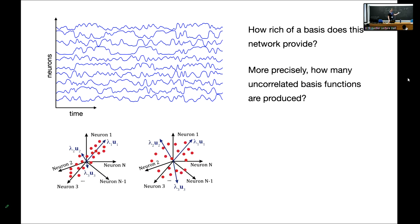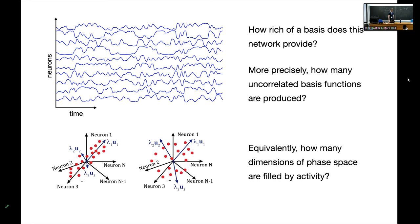When you take the shift in perspective to think about what you can read out from this population, there's a new kind of question: how rich a basis does this network provide? More precisely, how many uncorrelated temporal basis functions are produced by this activity? There's a clear geometric interpretation: think about the activity unfolding in an N-dimensional phase space. The question becomes how many dimensions of phase space get filled up by activity.